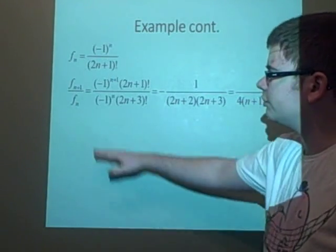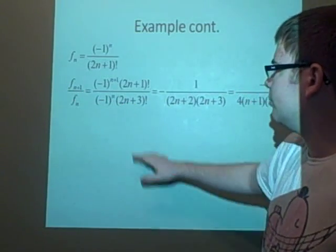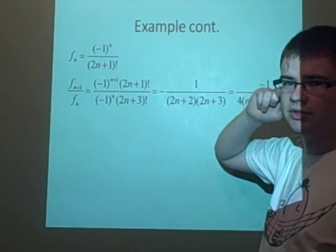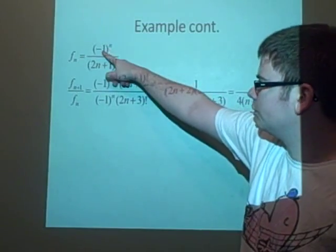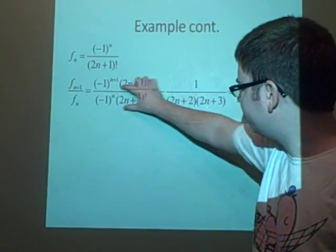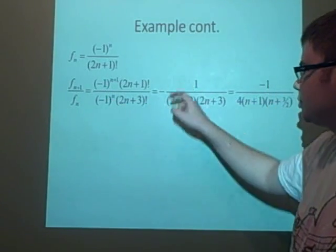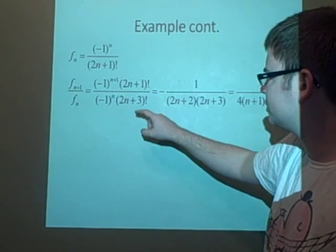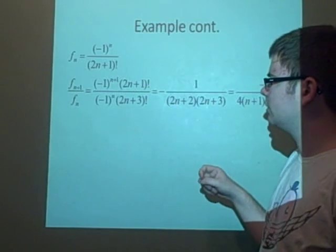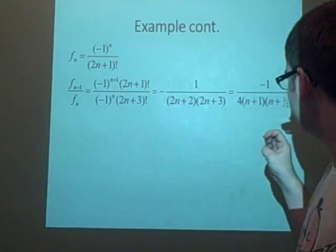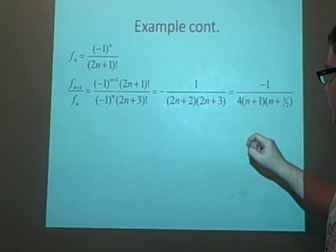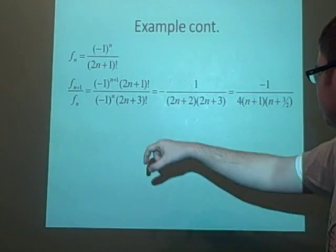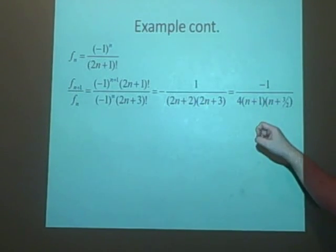Now what we want to do is, our fₙ here is going to be (-1)ⁿ over (2n+1) factorial. So one trick you always do is divide, so you do f(n+1) divided by fₙ, which will give you this. I've taken out the minus 1, so we're just left with t to the power n. Divide them, you get this, then you can simplify, so these go to just the minus 1. Since this one's a bit higher, this is basically this multiplied by (2n+2) and (2n+3).